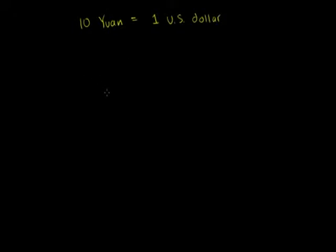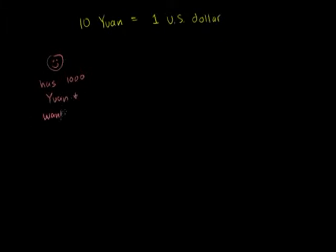Now let's imagine a situation — and in the next few videos I'll construct actual trade imbalances where this would actually happen. But let's say we live in a reality where someone has 1,000 yuan and wants to convert to dollars. Now if we just superficially looked at this 1,000 yuan and the quoted rate, we'd say that 1,000 yuan gets you 10 yuan per dollar, so that should be $100 at the quoted rate.